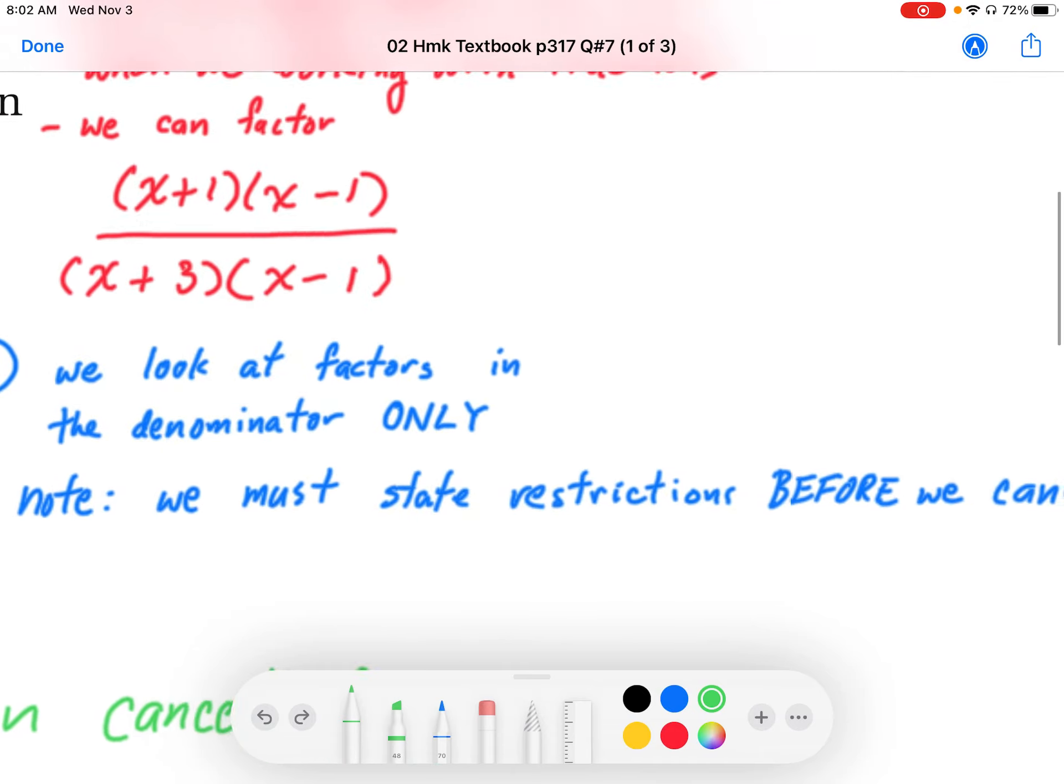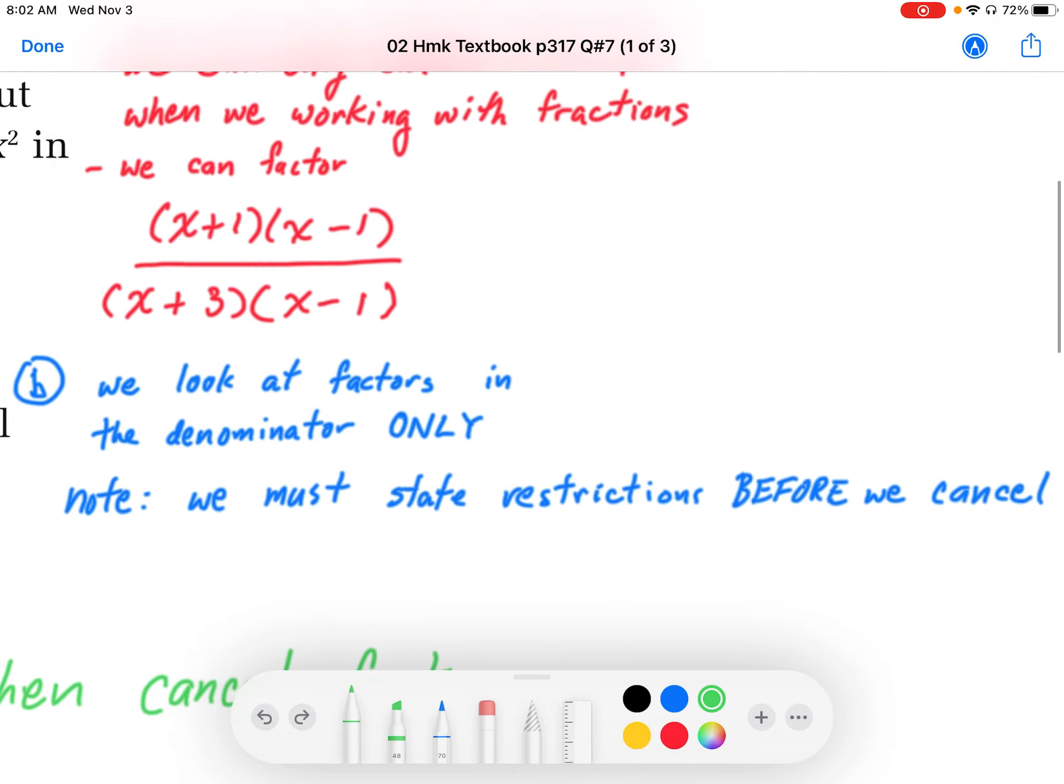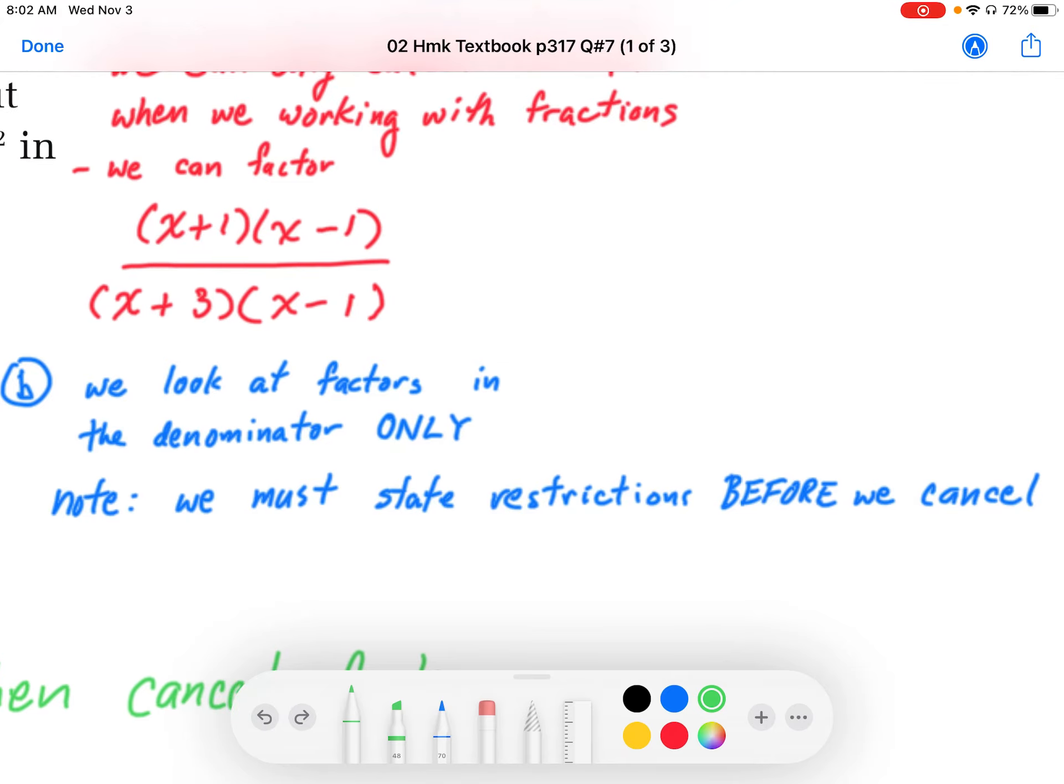And we can find the restrictions or non-permissible values before we cancel out. So in this case here, when we talk about the non-permissible values, we're talking about the denominator here, x plus 3, x minus 1. And the non-permissible values are when the x's that make the denominator equal to 0.